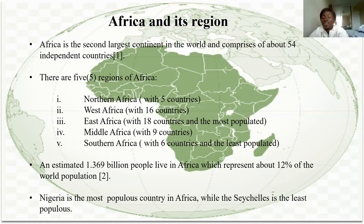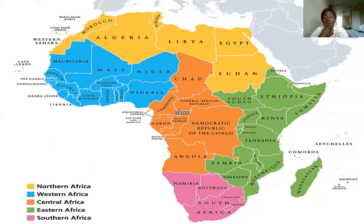Nigeria happens to be the most populous country in Africa, and that is also where I come from. Looking at the map of Africa, different colors show the different regions: blue for Northern Africa, with distinct colors representing West Africa, Central Africa, East Africa, and Southern Africa — showing which country belongs to which region.